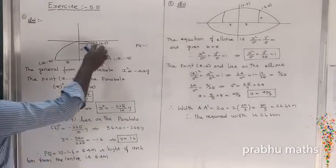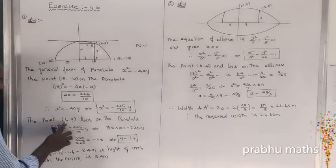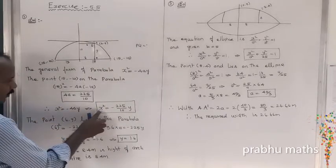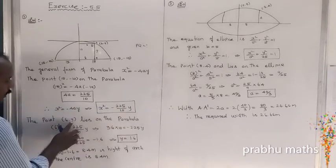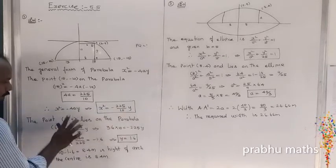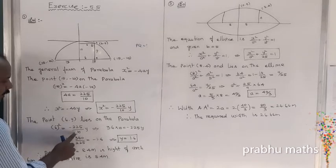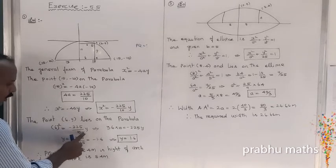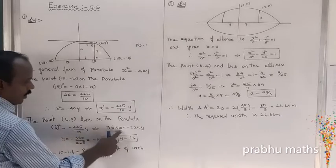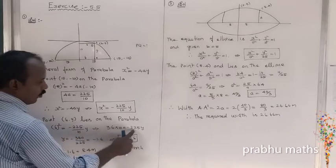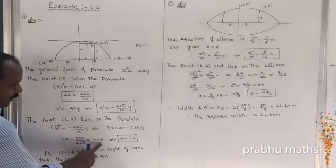Now passing through the point (6, y) to find the y value. So x is replaced by 6, y remains as y. So 6 squared equals minus 225 divided by 10, into y. That is 36 equals minus 225 into y, by cross multiplication.